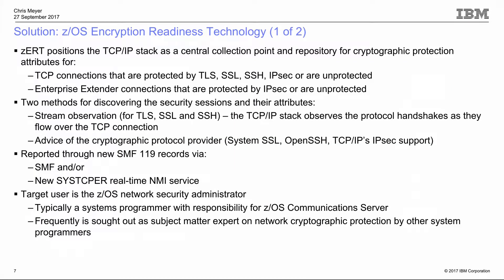Given that whole landscape, we identified the need to understand what type of protection has been applied to all IP-based connections, regardless of the technology being used. z/OS Encryption Readiness Technology is our solution. It positions the TCP/IP stack as a central collection point to identify and record different cryptographic protection attributes for all TCP connections and all Enterprise Extender connections. zERT identifies protection using TLS, SSL, SSH, and IPsec, and also records information about connections that are not protected at all.